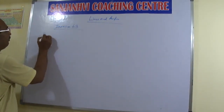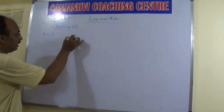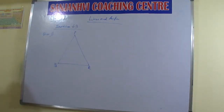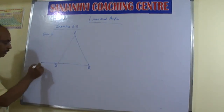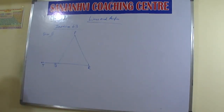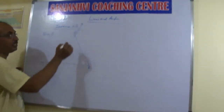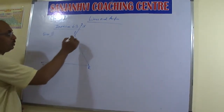Now we start with question number 1. Figure 6.39 shows triangle PQR. Side QR is extended up to T, and side PQ is extended up to S. We are given that angle RPS is 135 degrees, and the exterior angle at Q is 110 degrees. We need to find angle PRQ.